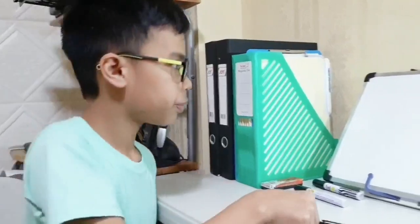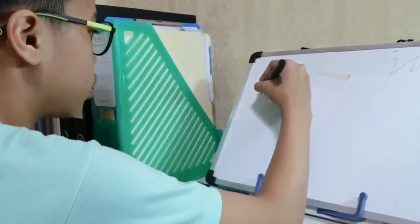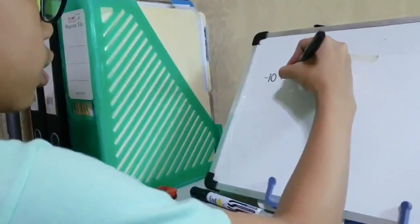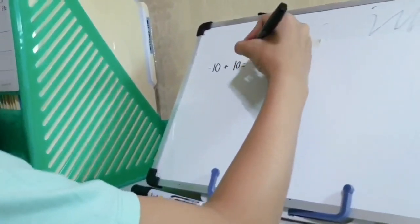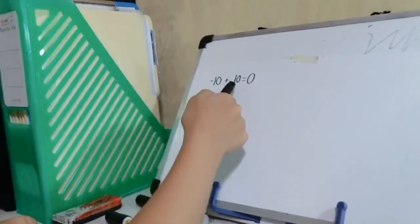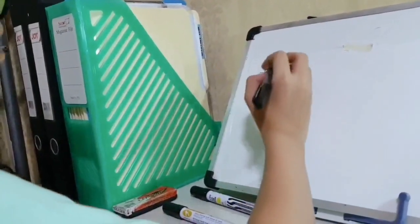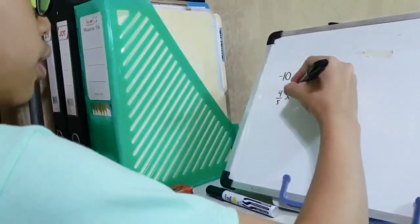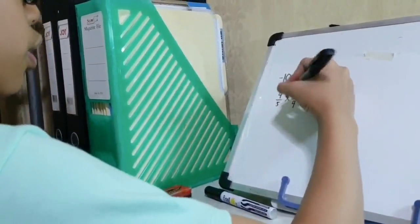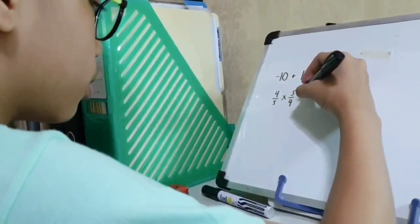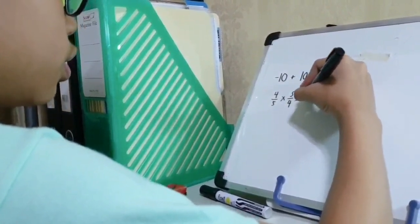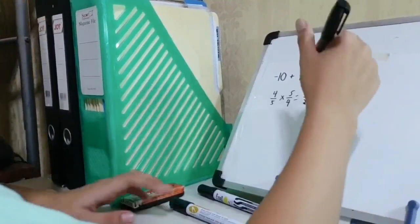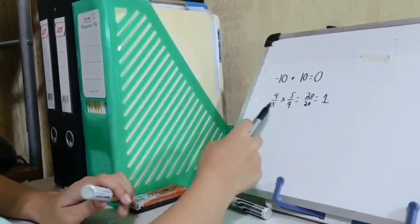The next property is the Inverse property. Inverse property is the opposite operation or number that will result in 1 or 0. This is an example of an additive inverse. Now let's do the multiplicative. 4 times 1/5 — we just multiply the denominator and the numerator. So 4 times 1/5 gives 1. This is called the multiplicative inverse.